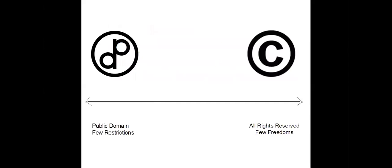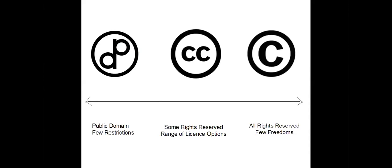If you think about the public domain on one hand — few restrictions on reuse, people reusing Jane Austen or Shakespeare — and on the other hand all rights reserved, where you'd probably get an angry letter from a lawyer — Creative Commons populates the middle ground and gives people a range of license options, running from more free on one hand to more restrictive on the other. The licenses themselves have really only four license elements that populate those six licenses.